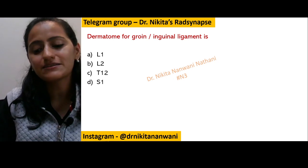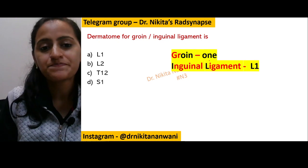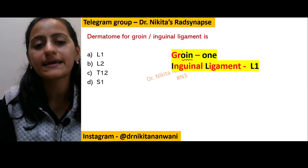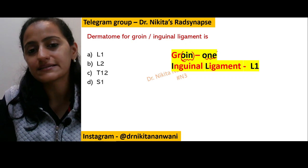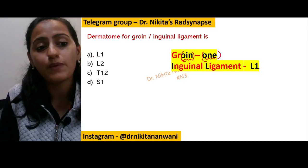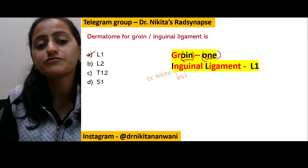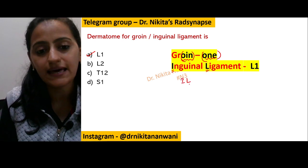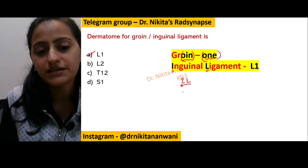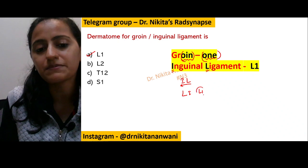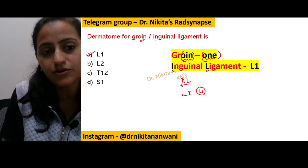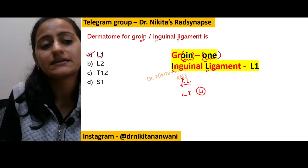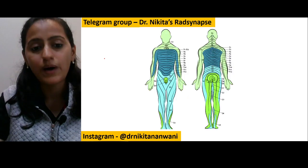The trick to remember here is: when you write groin, the letters O-I-N read as 'one', so it is L1. Also, for inguinal ligament, when you write it, the I and the L together read as L1. So be it groin or inguinal ligament, the dermatome is L1.